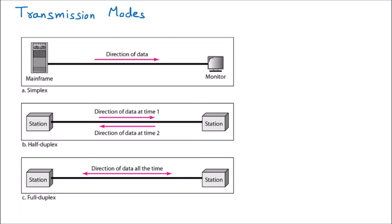Now we are discussing the topic called transmission modes. There are three modes of transmission: simplex, half duplex, and full duplex. Transmission mode means how we are going to send the data — what modes are available. Is it only sending but not receiving, or are we sending in both directions? That answer is given by the transmission mode.